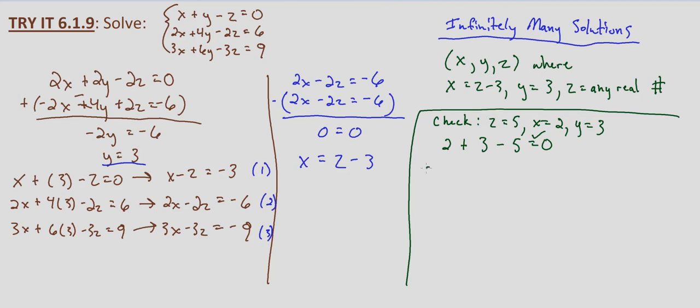So in our second equation, two times two, plus four times three, minus two times five for z. We want to know, does that equal six? Well, two times two is four plus four times three is 12. So four plus 12 is 16 minus 10. That does equal six.